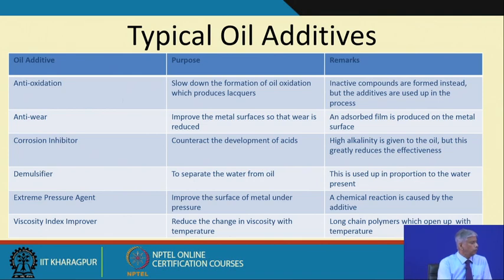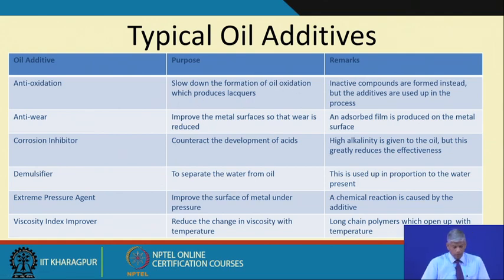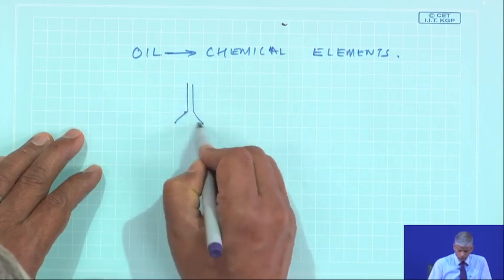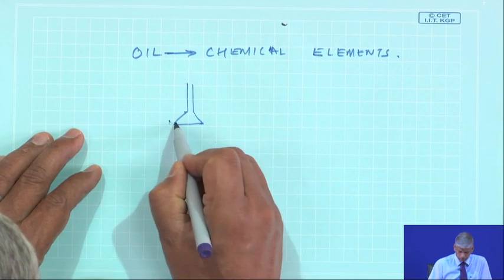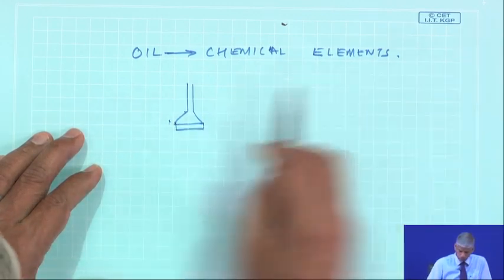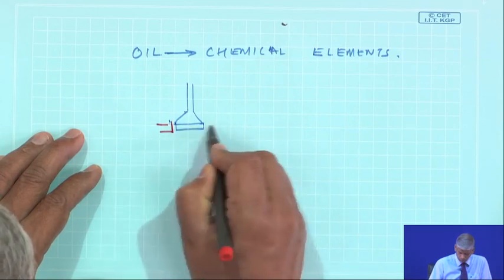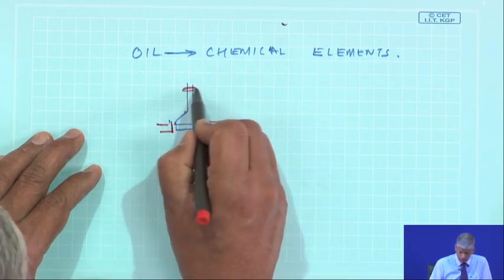When I do an oil analysis or look at the oil sample under a spectroscope, I may find some elements. I should not immediately say this is a foreign element and the oil is bad. There are certain purposes — anti-oxidation, for example, slows down the formation of oil oxidation which produces lacquers. These lacquers could form gummy deposits on the mating components, increase friction in valve seatings, and may damage valves in IC engines.